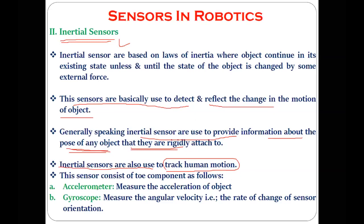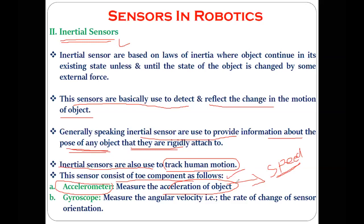There are two important components in the inertial sensor. One is the accelerometer, which measures the acceleration — that is, the speed — of the object. Another important component is the gyroscope, which measures the angular velocity, or the rate of change of sensor orientation.